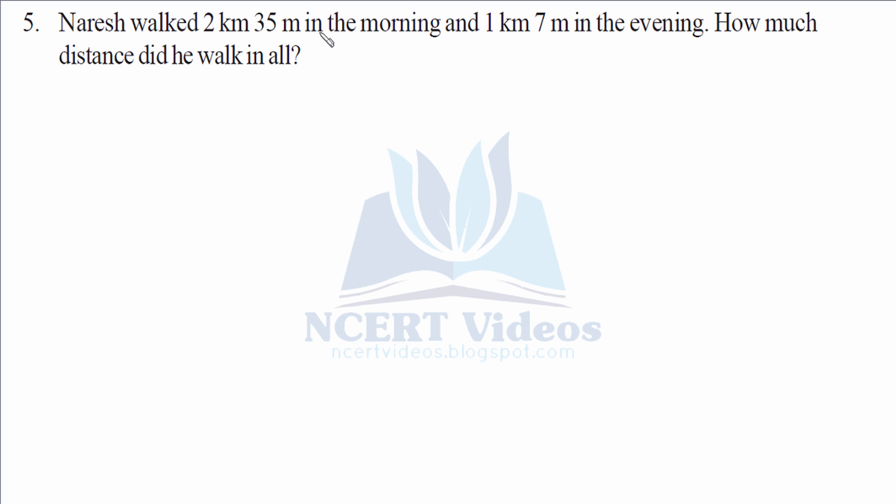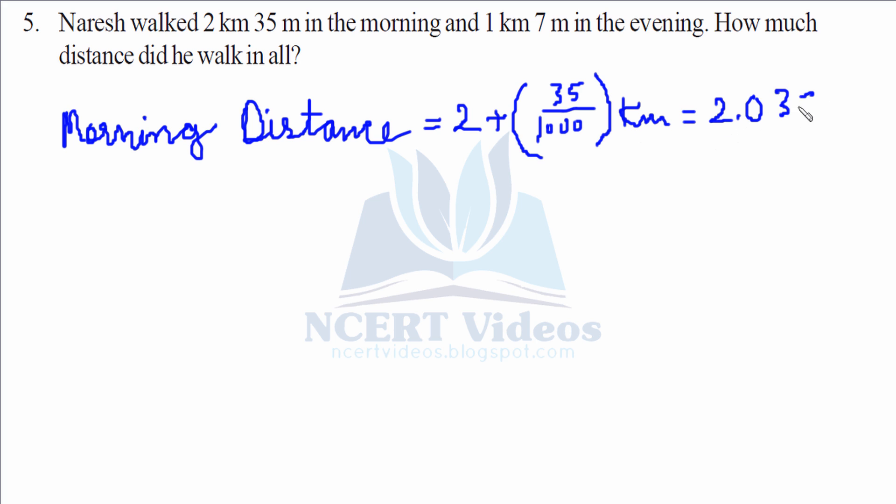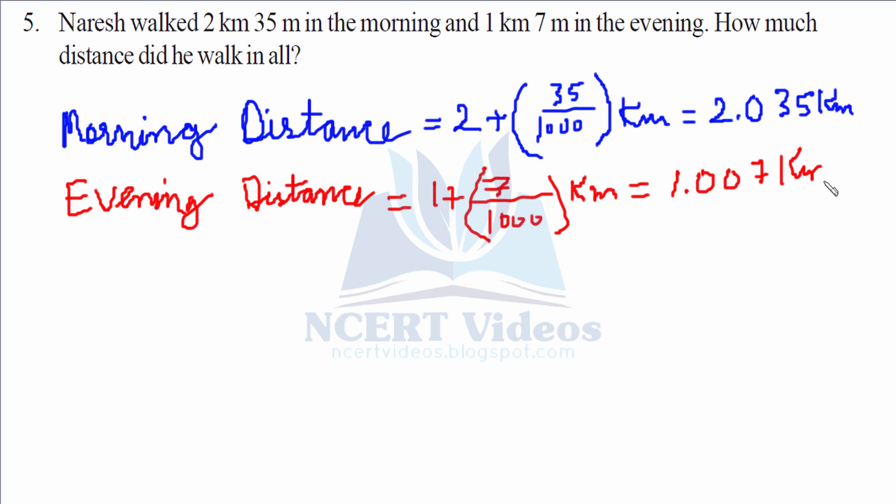Naresh walked 2 kilometer 35 meters in morning and in evening 1 kilometer 7 meter. Total walk. Morning distance is 2 plus 35 over 1000 kilometer because 1000 meter is 1 kilometer. We have to convert 35 meters into kilometers, so it gives 2.035 kilometer. Similarly evening distance would be 1.007 kilometers. You can only add similar units, you cannot add kilometers with meters. Total distance he walked in a day is 2.035 kilometers plus 1.007 kilometers. 7 plus 5 gives you 1 carry, 4, 0, 3, so 3.042 kilometers.